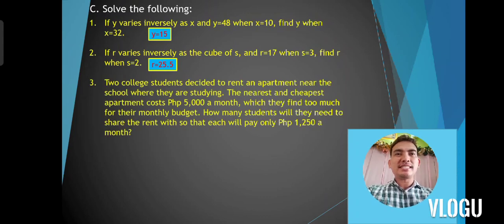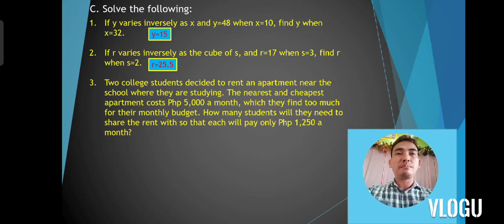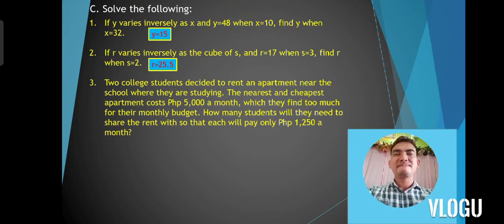Problem number 3: two college students decided to rent an apartment near their school. The nearest and cheapest apartment costs 5,000 pesos a month, which they find too much for their monthly budget. How many students will they need to share the rent so that each will pay only 1,250 pesos a month? The correct answer is 4 students total — they need 4 students including themselves.